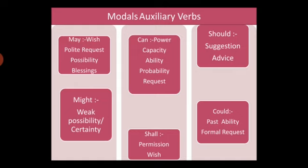'Can' is used to denote power, capacity, ability, probability, and request. 'He can lift the heavy box' — it denotes power. 'The glutton can eat 40 breads' — this sentence denotes capacity. 'He can qualify the UPSC exam' — this is ability. 'The weak students can qualify the exam' — now it's probability. 'Can I use your pen?' — it is a request.